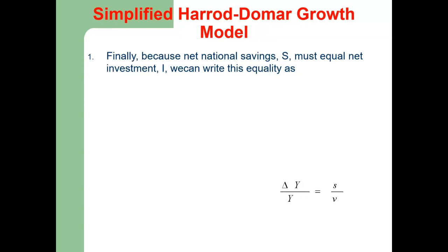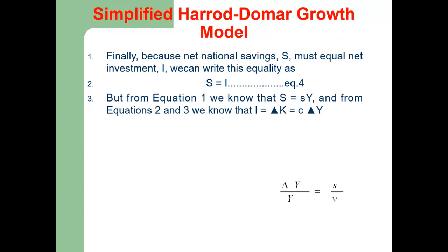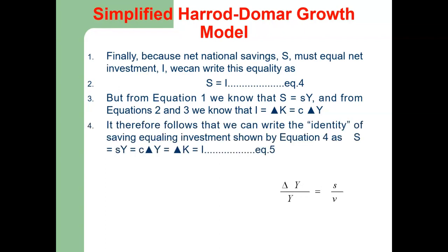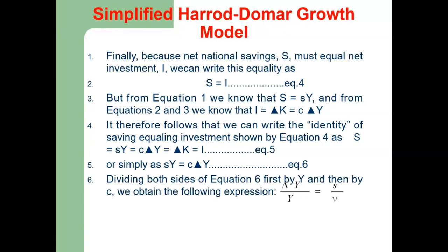Equation 4: because net national savings S must equal net investment I, we write S = I. From equation 1, S = sY; from equations 2 and 3, I = delta K = C times delta Y. Therefore, substituting into equation 4, we get: sY = C times delta Y = delta K = I.